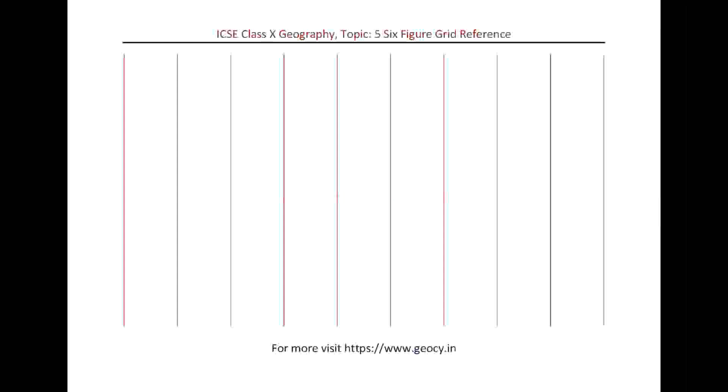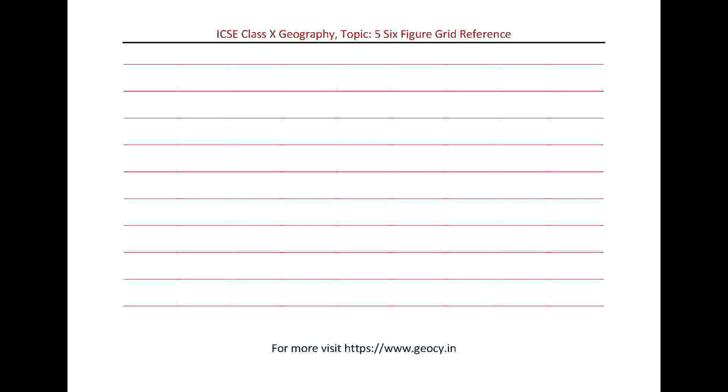Eastings and Northings. Eastings are vertical red lines on topographical maps. They are called Eastings as their numbers increase to the East. Northings are horizontal red lines on topographical maps. These numbers increase to the North.